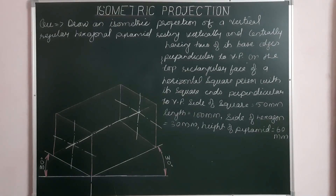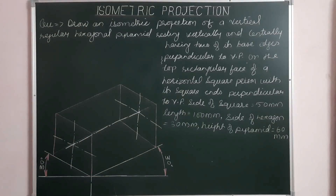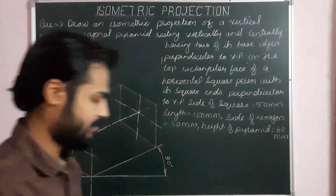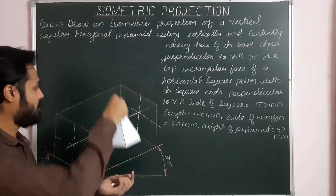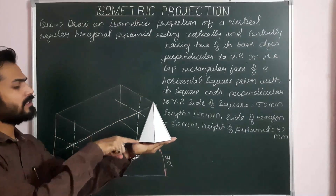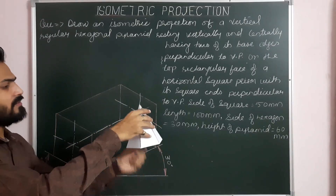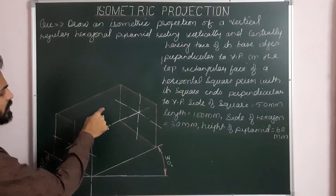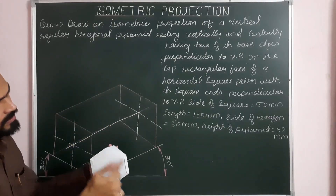Now for the second solid: the hexagonal pyramid is resting vertically and centrally on the upper rectangular face of the square prism, with two of its base edges perpendicular to VP. The second solid, the hexagonal pyramid, rests on the upper rectangular face of the square prism. We need to mark the center of the hexagonal plane at the midpoint of this rectangular face of the square prism, and from that point draw the base.